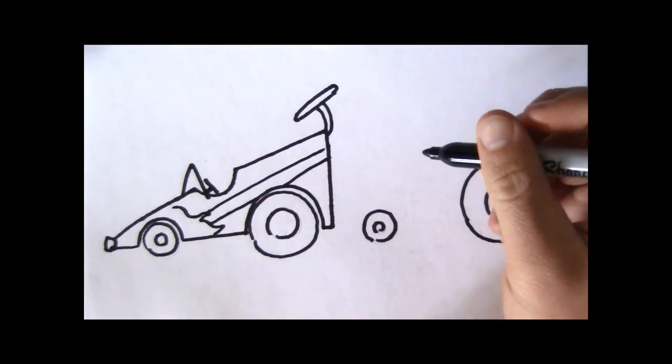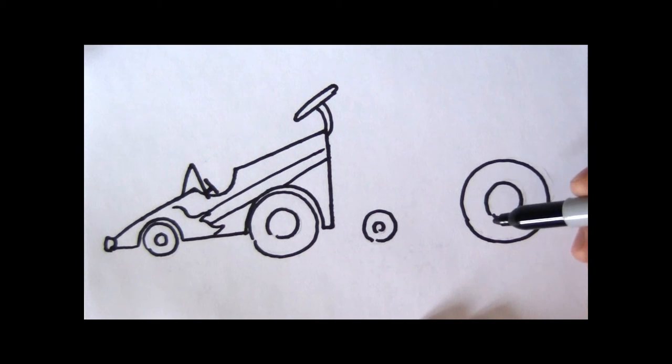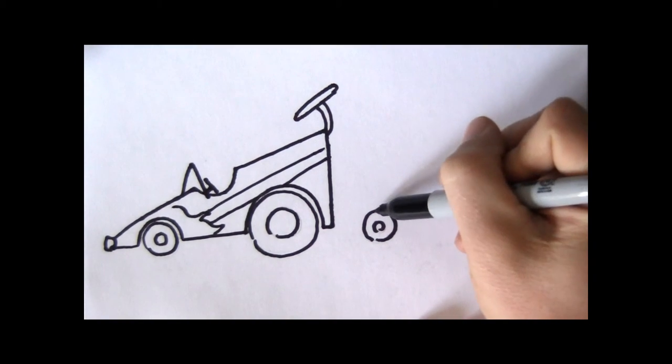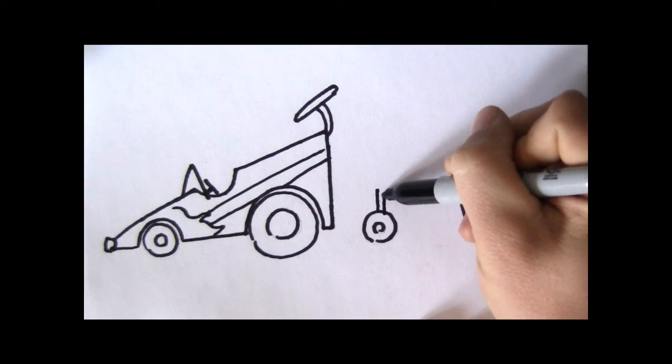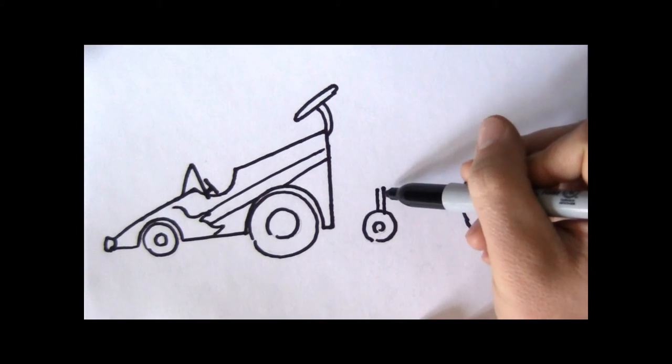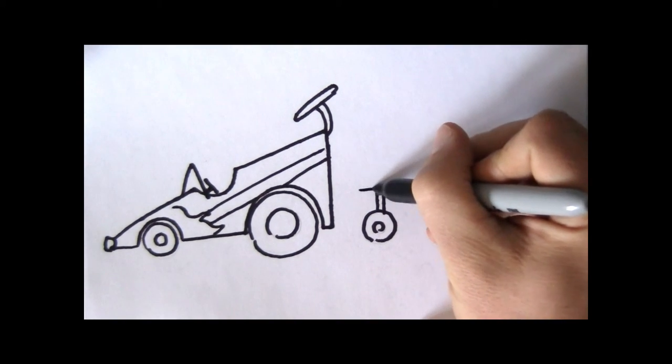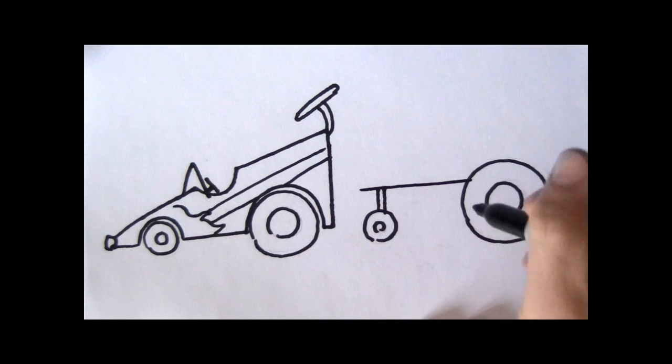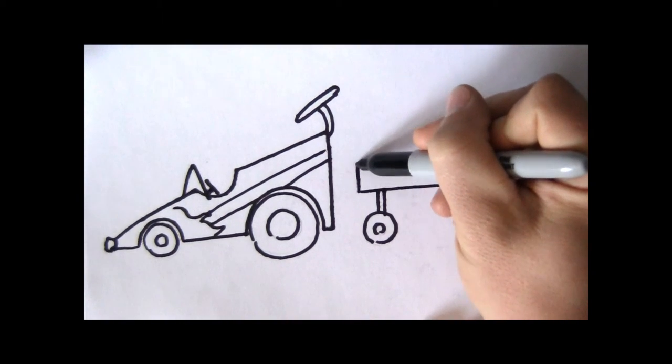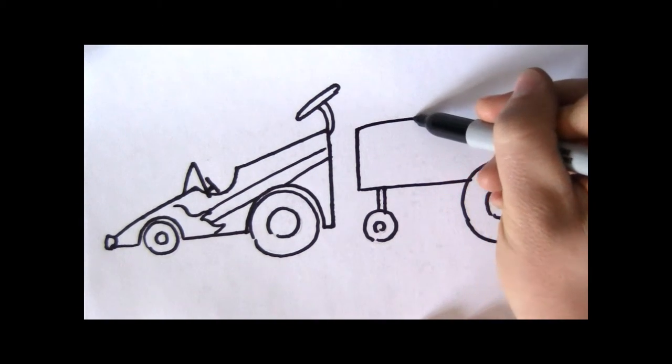But we just drew a race car with this. What else could we draw with a little wheel and a big wheel? How about a tractor? We're going to draw two lines that come up from the little wheel. And then a line that comes across. We're going to make a big rectangle.